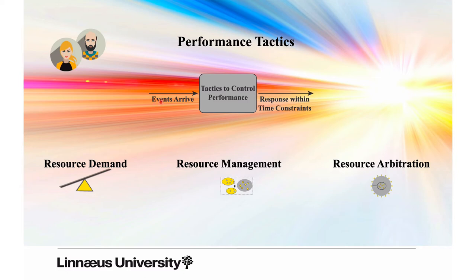When an event arrives there is some processing in the system, and this processing has an upper bound on certain attributes — for instance response time, or number of requests per second that the system can process. There are various tactics available. One is to focus on resource demand: you should limit the demand for system resources, which you can do by controlling the number of events, the complexity of the events, and the complexity of the processing.